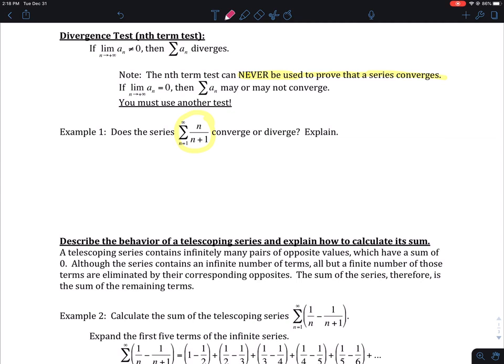So if I look at example one, I will use the divergence test anytime I can take the limit as n approaches infinity and get something that's other than zero. If it's equal to zero, it doesn't tell me anything. So here in this case, this limit as n approaches infinity is the definition of a horizontal asymptote. Remember?